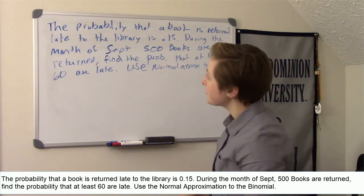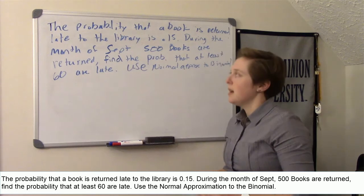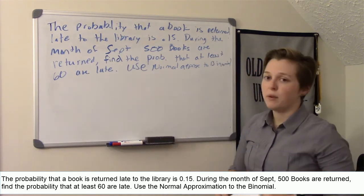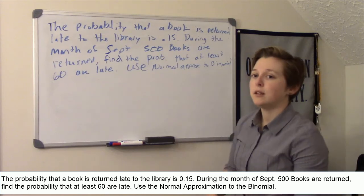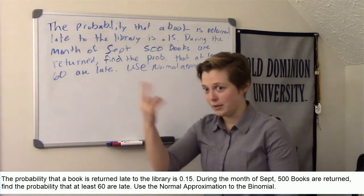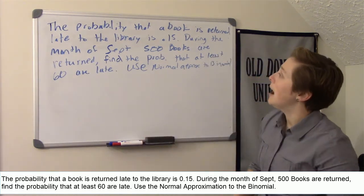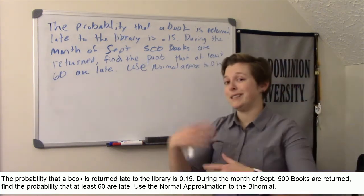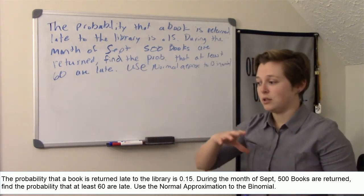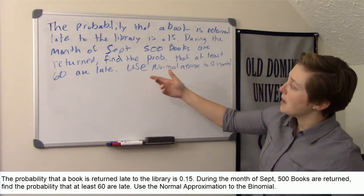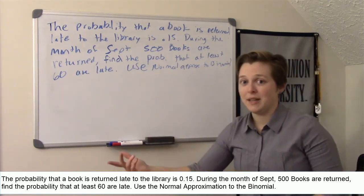So I'm just going to read through this problem. The probability that a book is returned late to the library is 0.15. So either you turn in a book late or not, so that's a binomial. During the month of September, 500 books are returned. So that's the set number, your set number of trials. You have 500 opportunities to be late. And we want to find the probability that at least 60 are late.